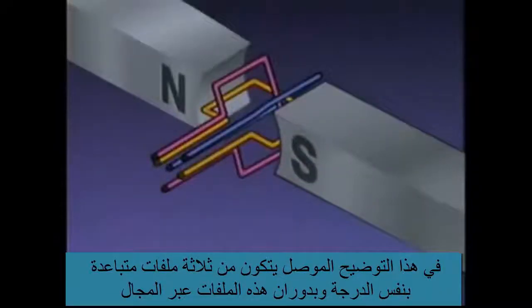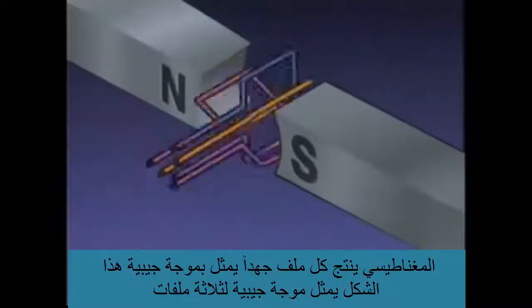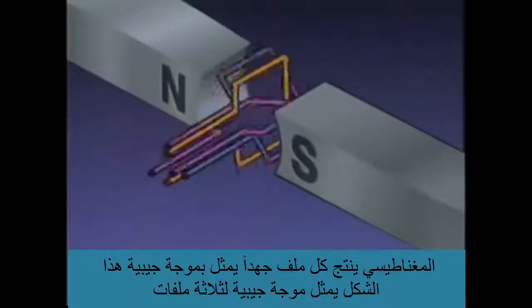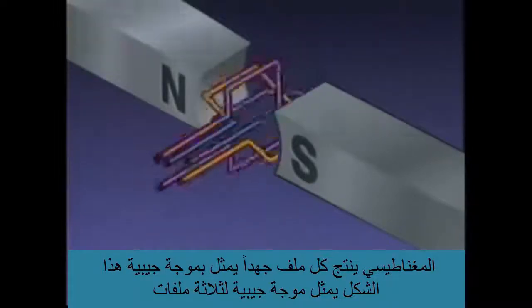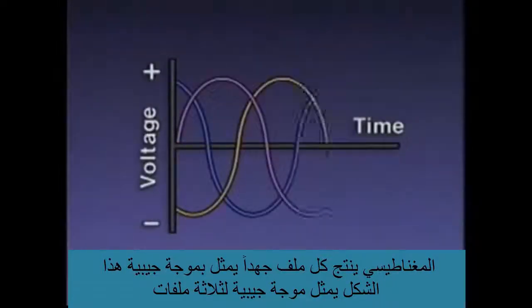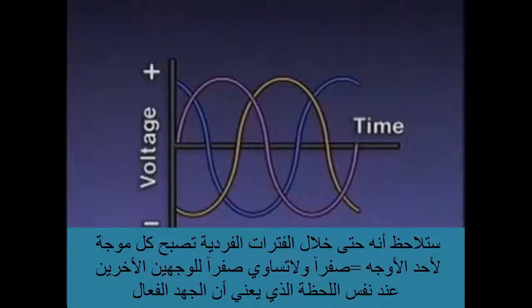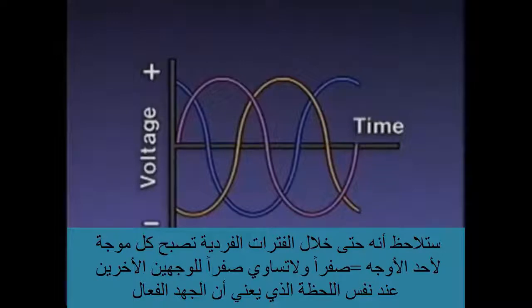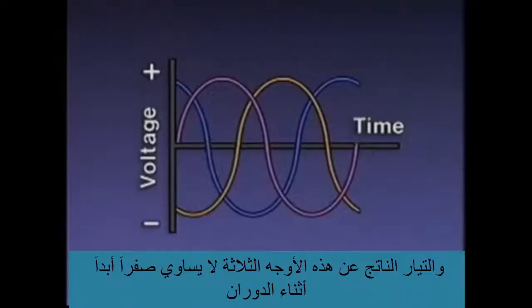In a three-phase system, the conductor consists of three equally spaced coils or loops. As these loops rotate through the magnetic field, each loop produces voltage represented by a sine wave. Even though each individual sine wave becomes zero at certain times, the sine waves are never zero for two phases at the same time, meaning the effective voltage and current produced are never zero while operating.